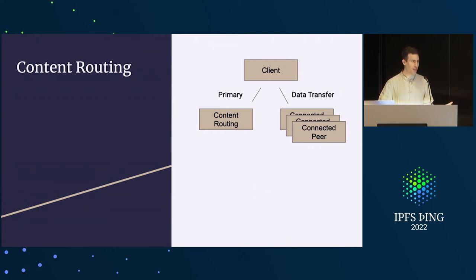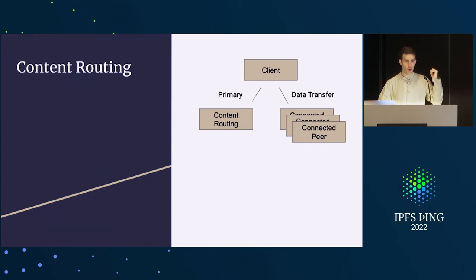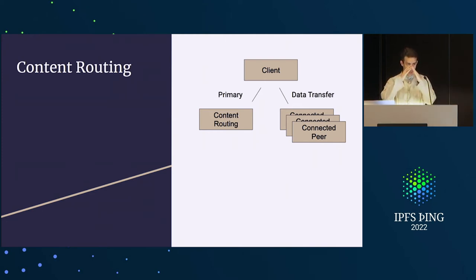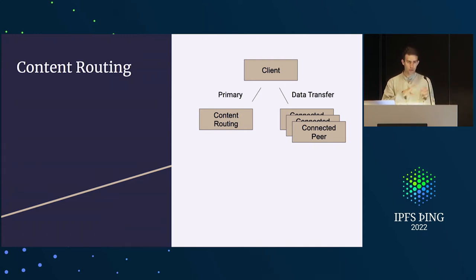But if content routing meets the performance targets we were talking about yesterday — 10 milliseconds — that stops being nearly as scary. In fact, it might be faster to first go to content routing and ask who's near me, who should I be talking to. If that's only 10 milliseconds, knowing that lets me go to the right peer, which can save a lot of bandwidth versus trying all connected peers before making that call. You'd at least want to do them in parallel, or maybe just start with content routing.